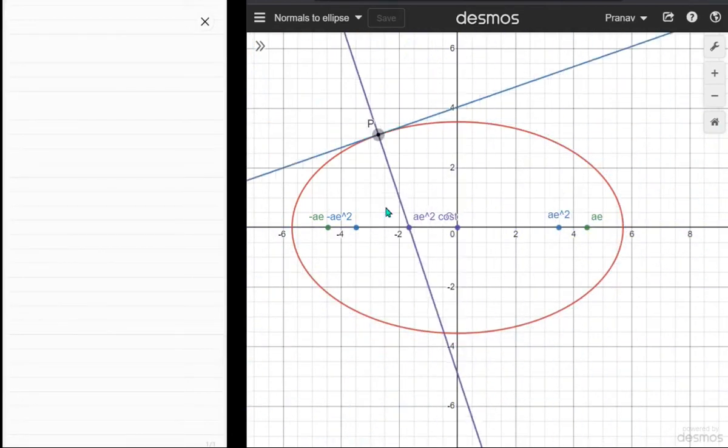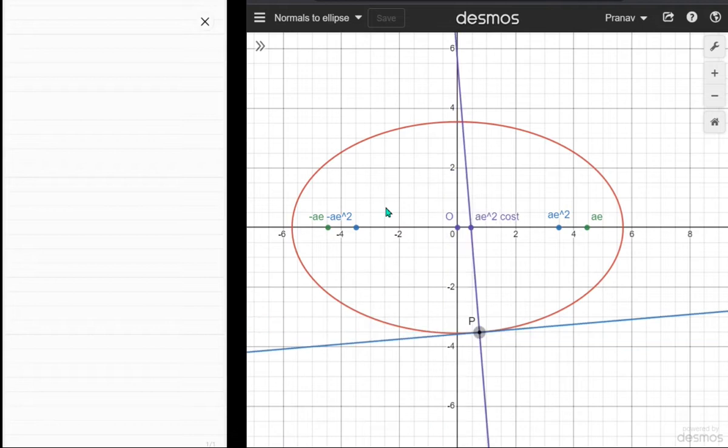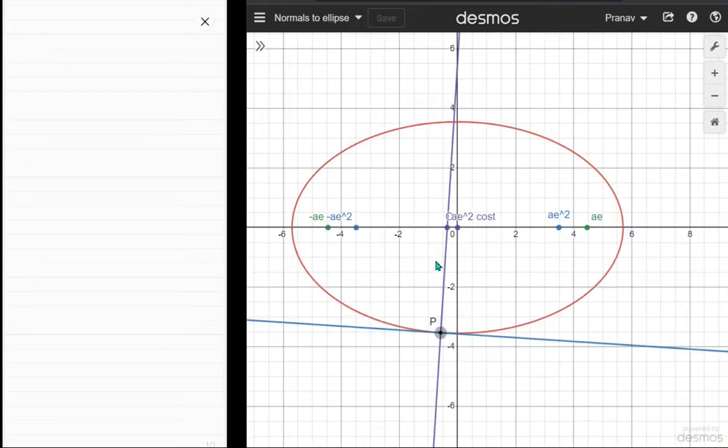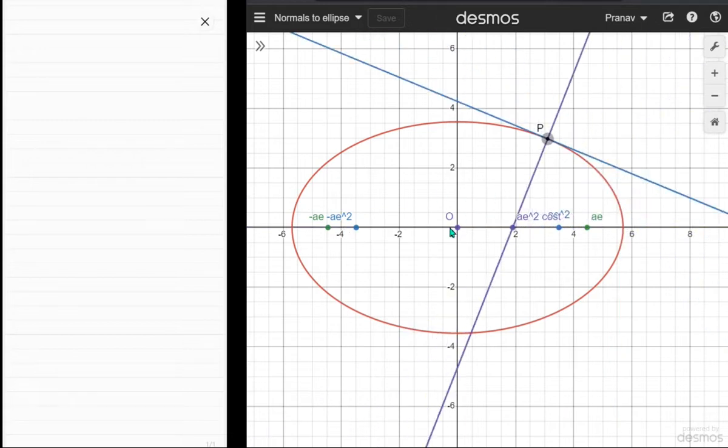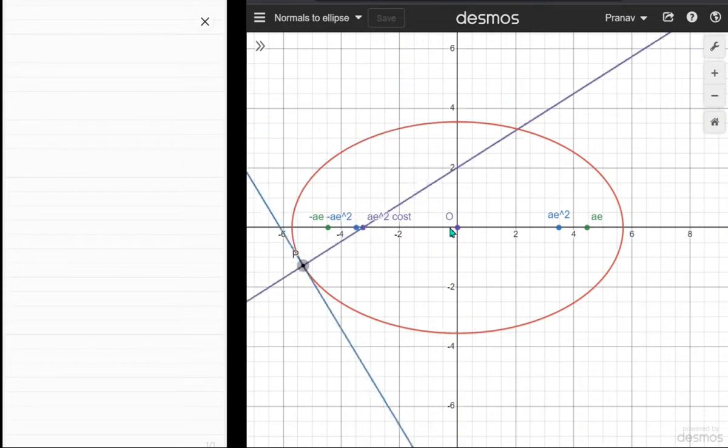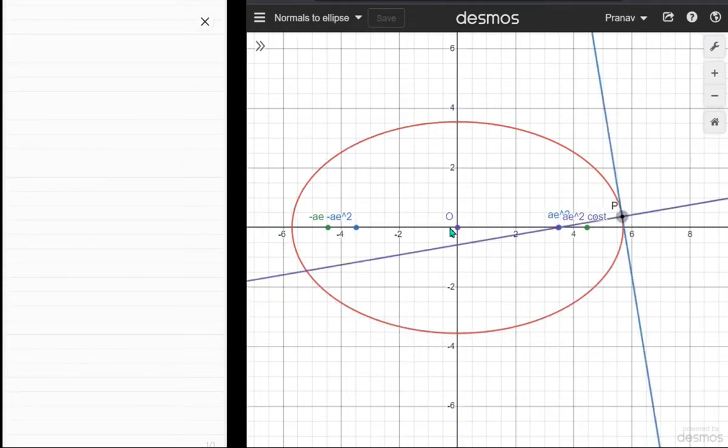This video is about proving that the x-intercept of the normal to an ellipse lies in a certain range: negative ae squared to ae squared. So how do we prove that?